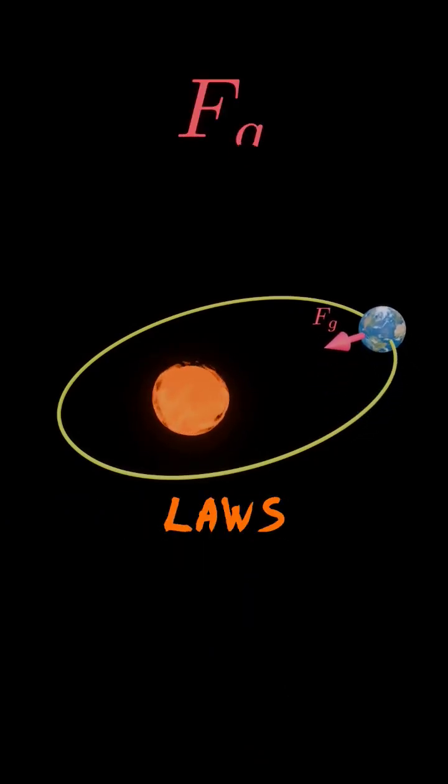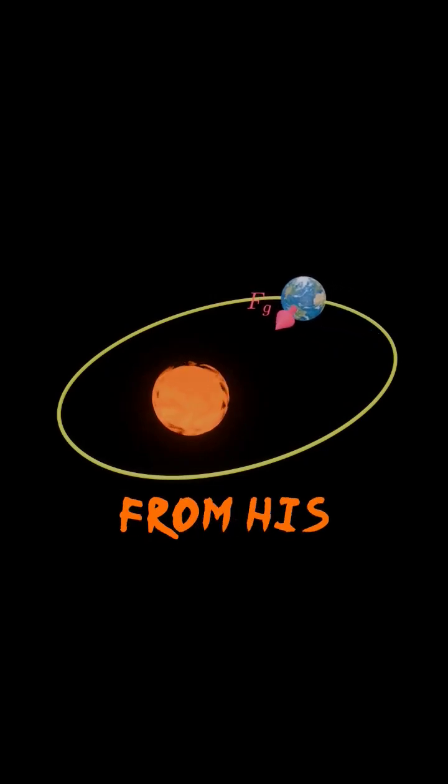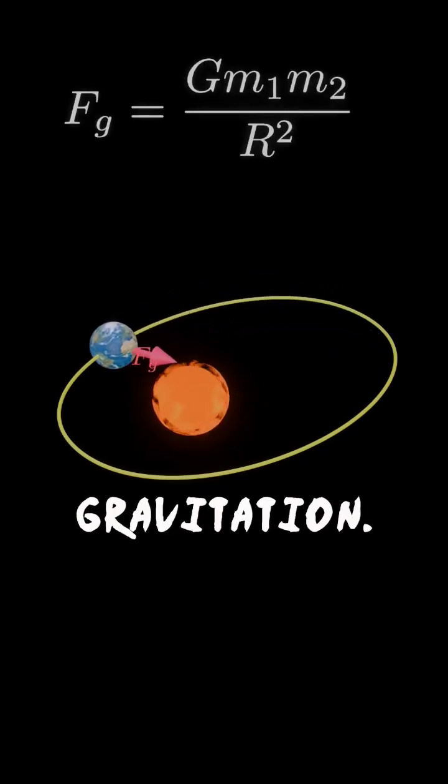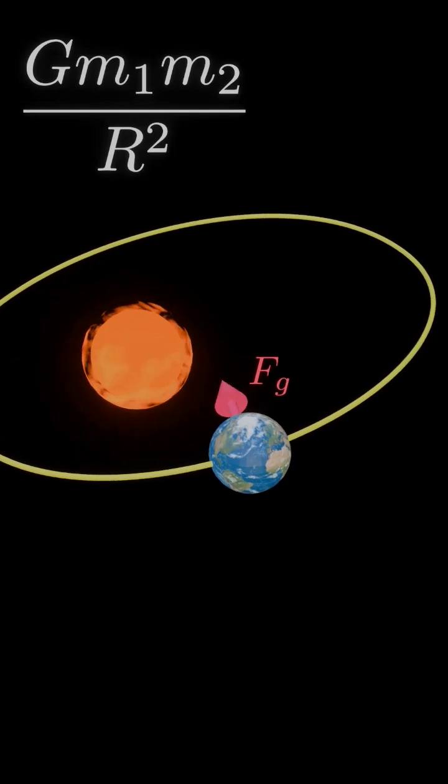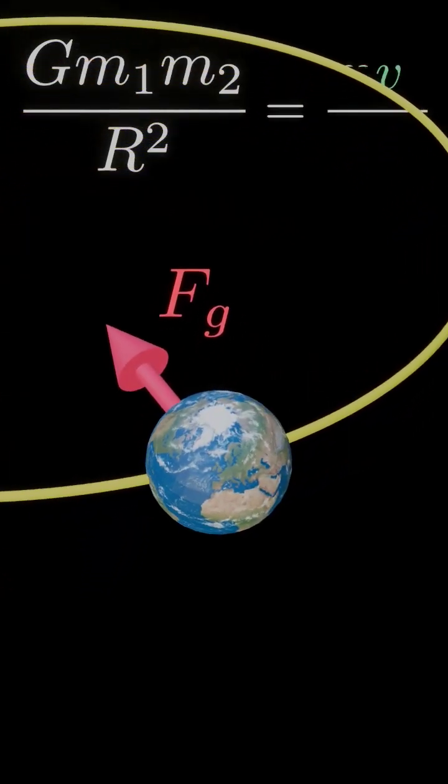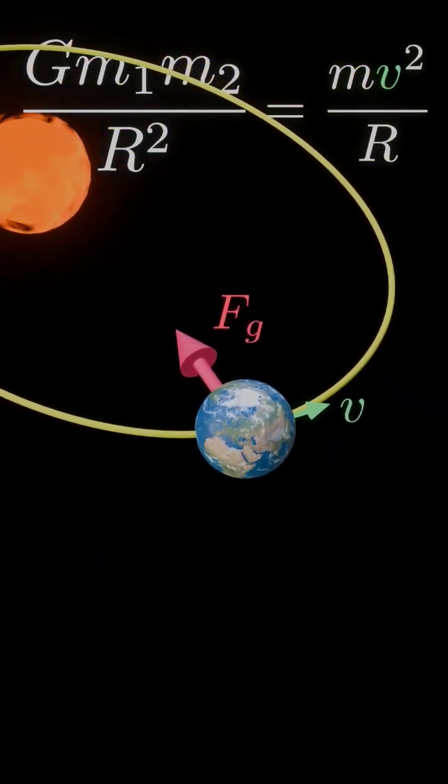Newton showed that Kepler's laws directly resulted from his own law of universal gravitation. The force due to the planets' gravitational attraction provides the centripetal acceleration that keeps a planet in orbit.